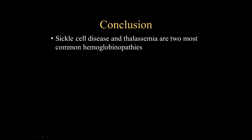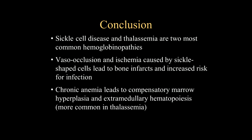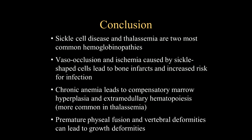In conclusion, sickle cell disease and thalassemia are two of the most common hemoglobinopathies. They result in vaso-occlusion and ischemia in the sickle cell patients because of the altered morphology of the cells, resulting in clogging of the vessels, bone infarcts, and an increased risk for infection. Both sickle cell and thalassemia can have chronic anemia as a prominent feature, leading to compensatory marrow hyperplasia and sometimes extramedullary hematopoiesis, which is more common in thalassemia patients. Finally, premature physeal fusion and vertebral deformities can lead to growth deformities.